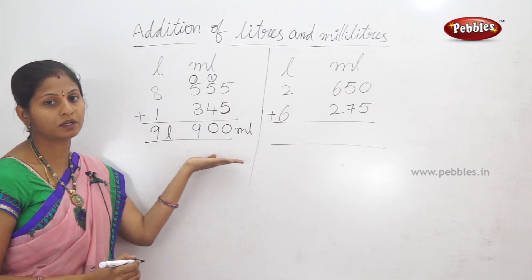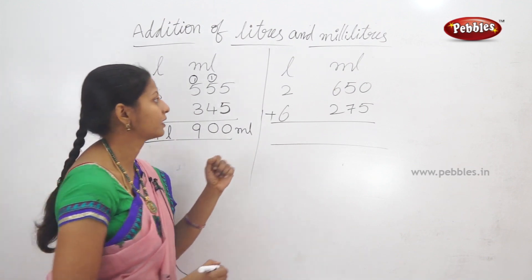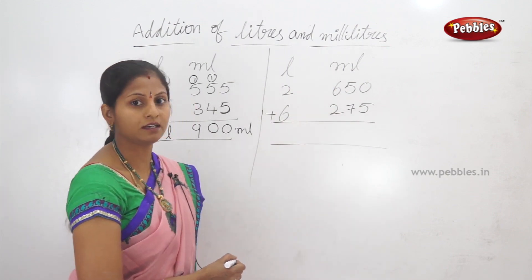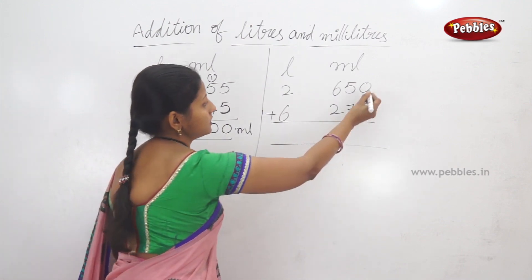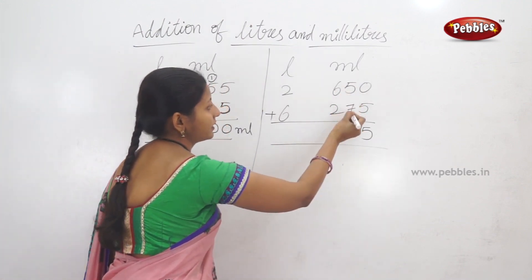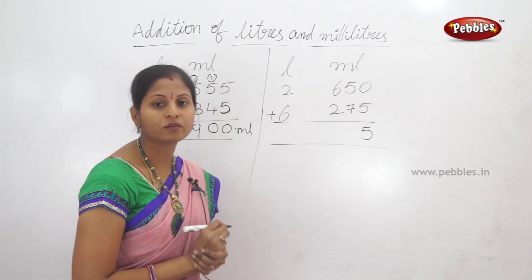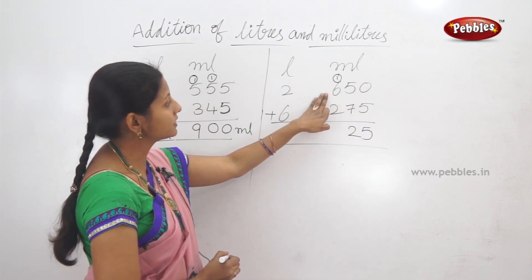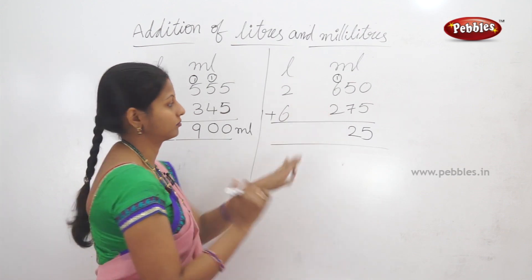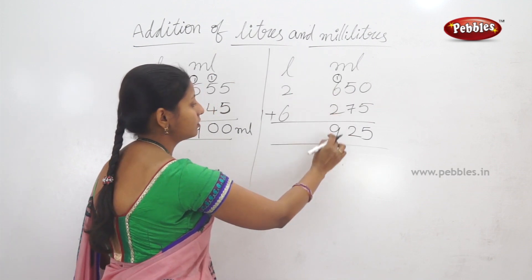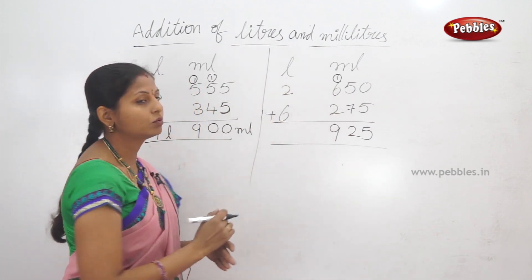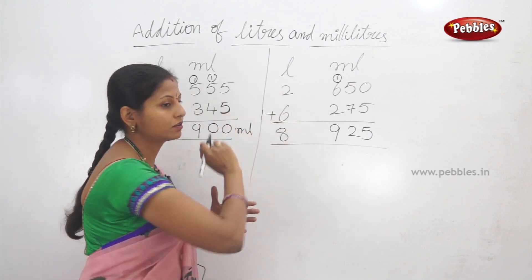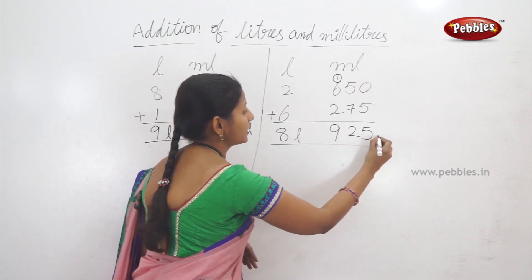This is another addition example. Ones place: 1 plus 2 equals 3... actually 2 here and carry 1. 1 plus 6 equals 7, plus 2 equals 9. Then liters: 2 plus 6 equals 8. So 2 liters 650 milliliters plus 6 liters 275 milliliters equals 8 liters 925 milliliters.